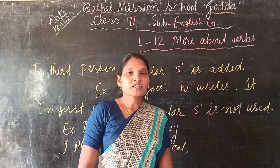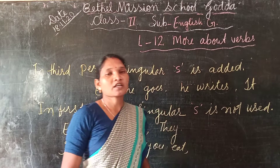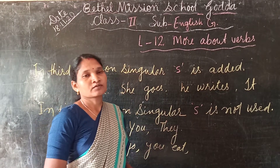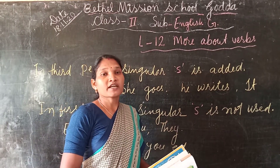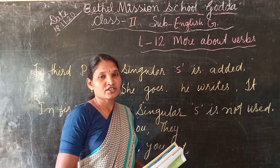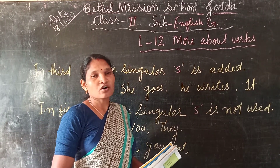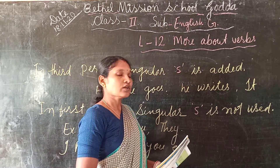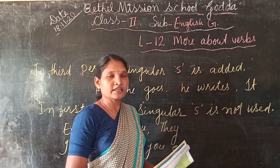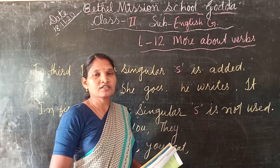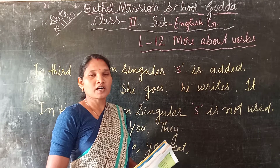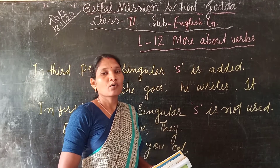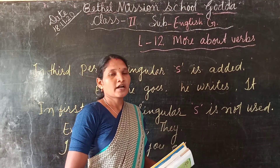So children, which are the verbs? Verbs are action verbs or doing verbs. So like write, read, eat, go, come — all these are verbs.